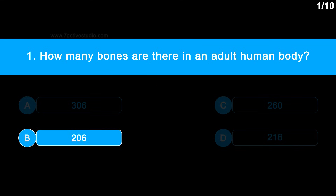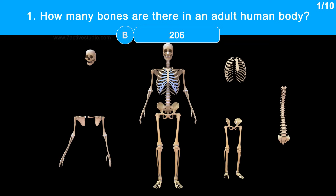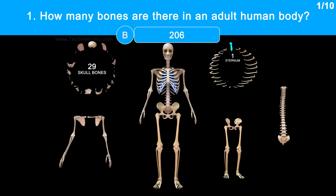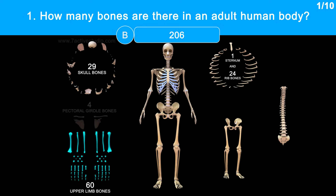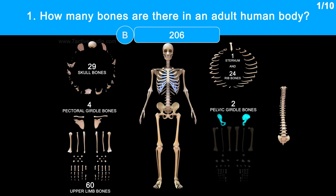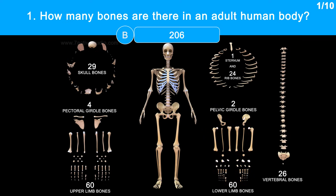The correct answer is option B, 206 bones. There are a total of 206 bones in the adult human body: 29 skull bones, 1 sternum and 24 rib bones, 4 pectoral girdle bones, 60 upper limb bones, 2 pelvic girdle bones, 60 lower limb bones, and 26 vertebral bones.